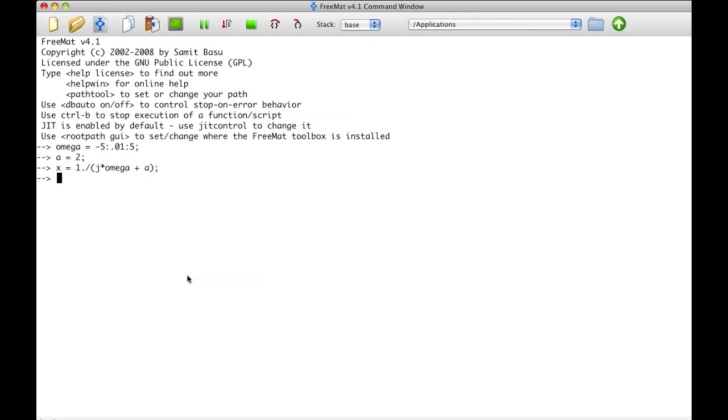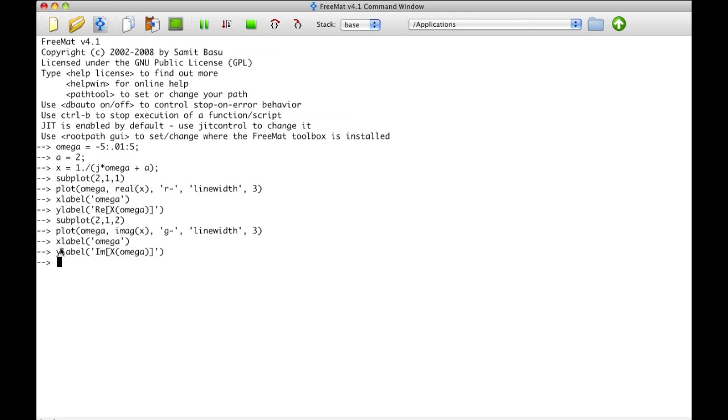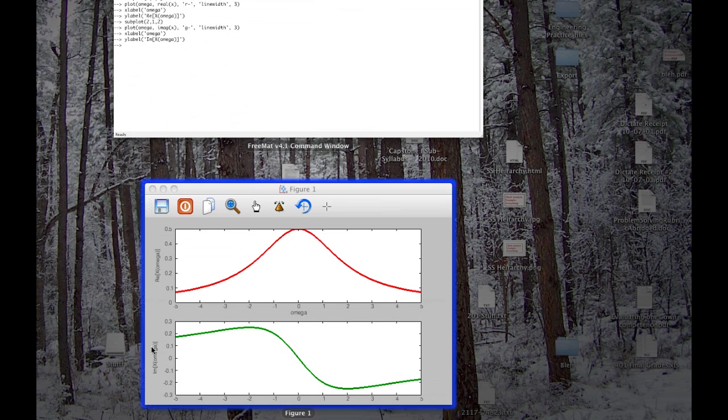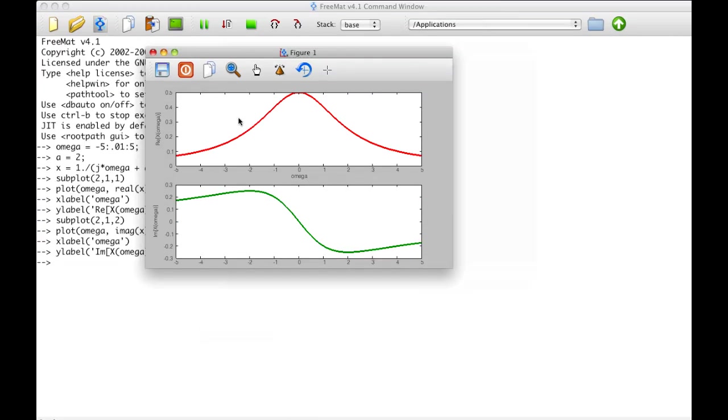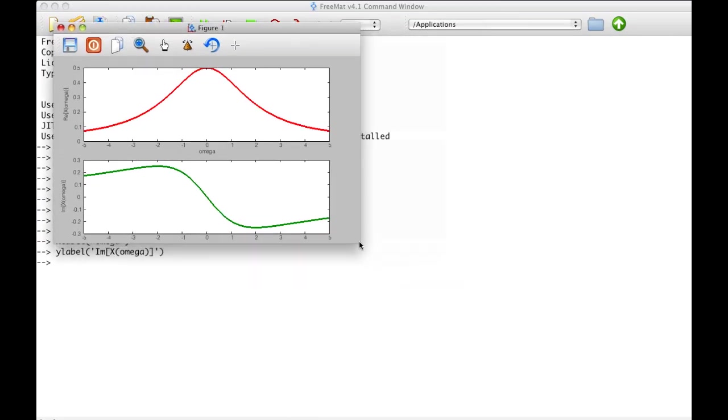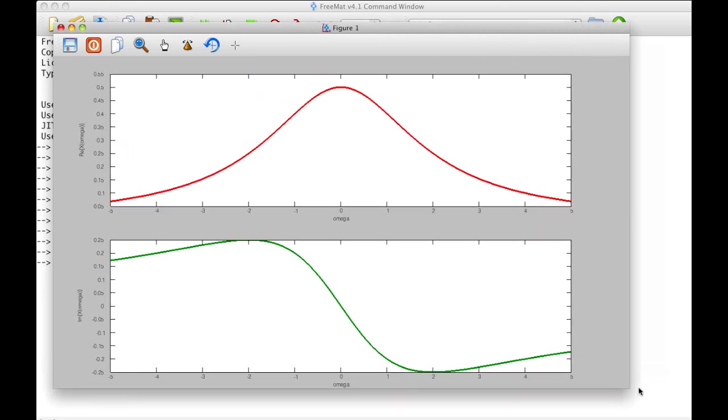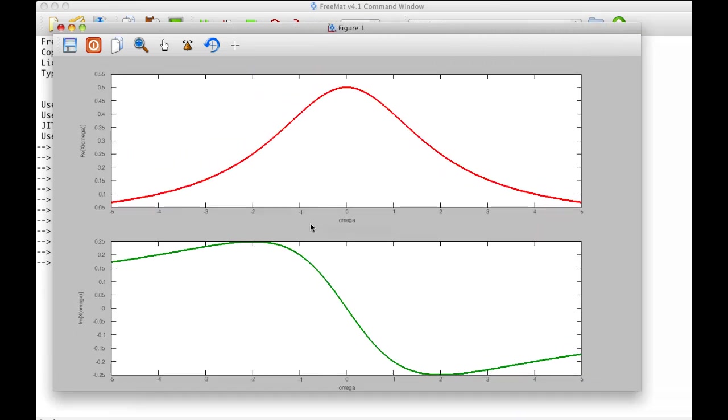Now we'll set up the plot. So this whole chunk of commands gives us then the following plot, which looks like this. And you can see that the real part of X(ω) is symmetric about the point omega equals zero. It's an even function. It starts very close to zero, goes up to a half, goes back down very close to zero.